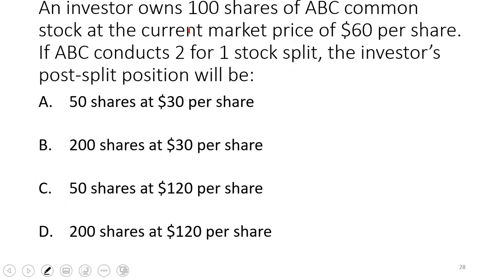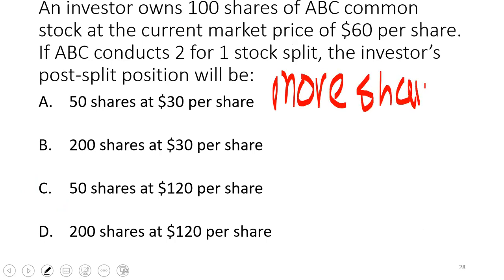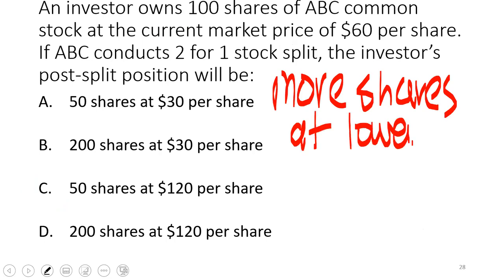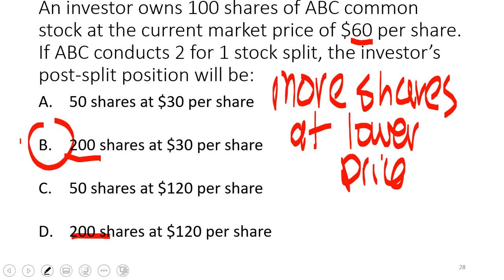An investor owns 100 shares of ABC common stock at a market price of $60. If ABC conducts a two-for-one stock split, you will have more shares at a lower price — 200 shares at $30. You can eliminate any answer choice that doesn't have more than 100 shares at less than $60. In a reverse split it would be fewer shares at a higher price. Important: there's no change in proportional ownership — you have twice as many shares, but so does everyone else.